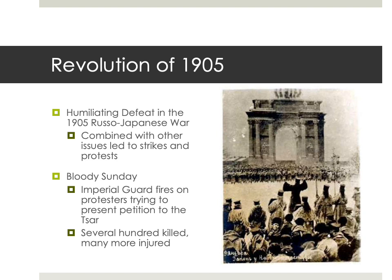There were mutinies within the Russian military. The most famous one was a mutiny aboard a Russian battleship in the Black Sea Fleet called the Battleship Potemkin — it's a famous event and there was a movie made about it. Protests and strikes got even worse after Bloody Sunday, and this is generally referred to as the Revolution of 1905.